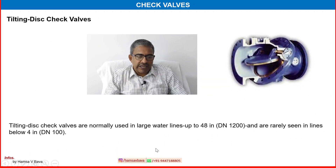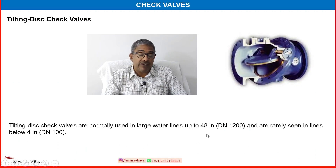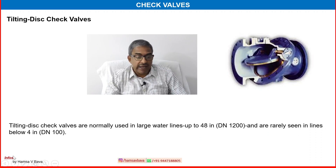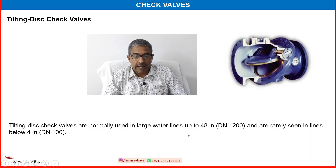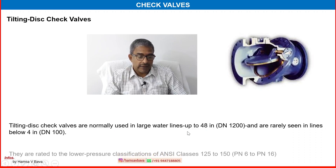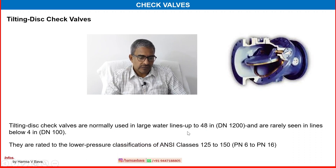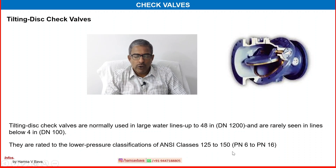Tilting disc check valves are normally used in large water lines up to 48 inches and are rarely seen in sizes below 4 inches. They are rated to lower pressure classifications of ANSI classes 125 to 150 PSI.